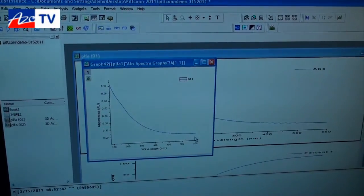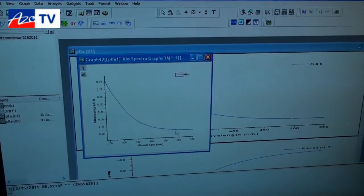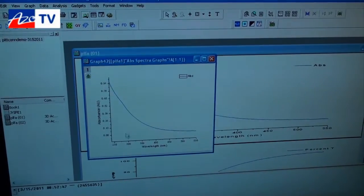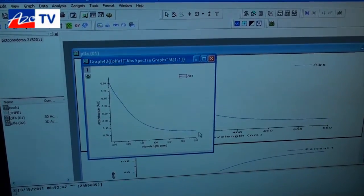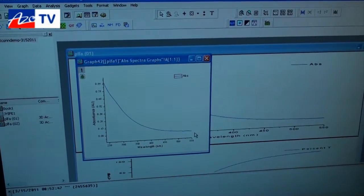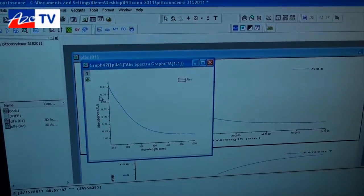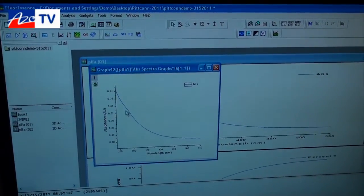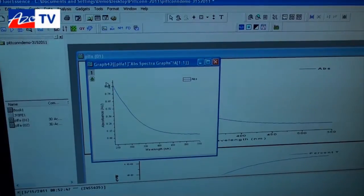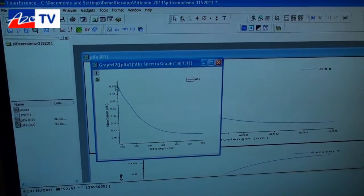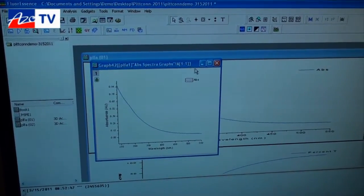One key thing about the instrument design is that it actually scans the excitation and absorption wavelength in reverse, and this minimizes the exposure of the sample to the ultraviolet end of the spectrum. So as you scan in reverse you actually end up avoiding exposure to the UV light which can photo bleach the sample.